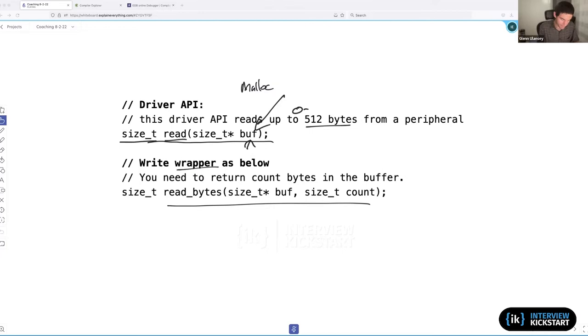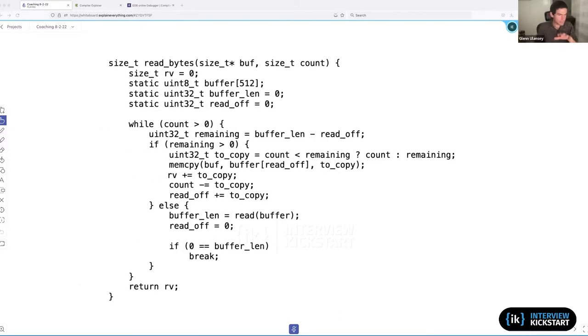What you're being asked to implement is a wrapper that allows you to specify how many bytes you want to get. You still provide a buffer as input, but rather than getting back anywhere between zero and 512 bytes, we instead receive anywhere between zero and count bytes. There's a couple of different aspects to this question.